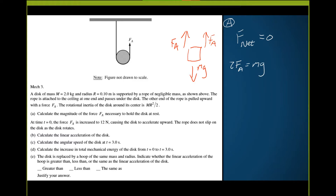So two FA equals mg, therefore FA equals mg over 2. Substituting in — mass is 2 kg and gravity is 10 m/s² — FA equals 10 Newtons. That should be good for part A.